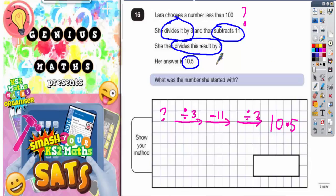Now we need to figure out how to get back to the mystery number that she picked in the first place. To get back to the question mark, we've got to go in reverse. We need to do the opposite of divide by 2, which is times by 2, the opposite of subtract 11, which is add 11, and the opposite of divide by 3, which is times by 3.